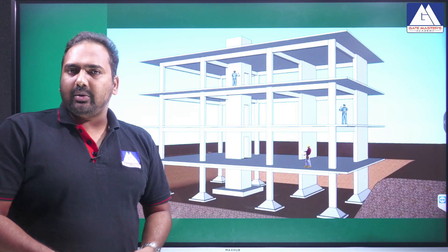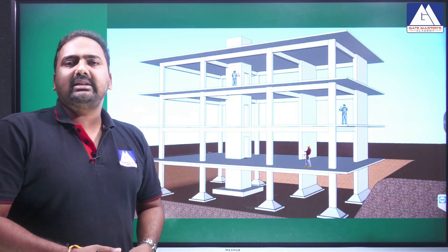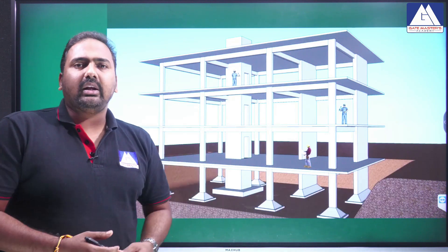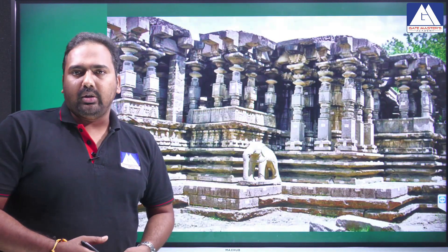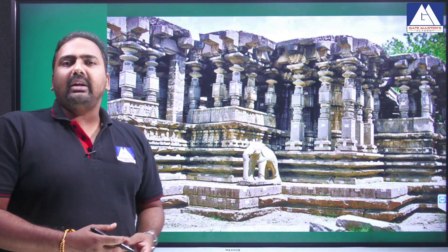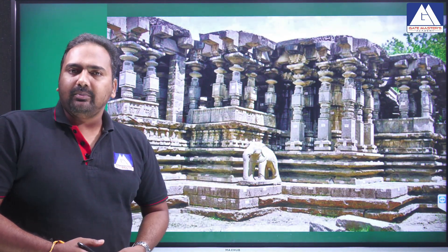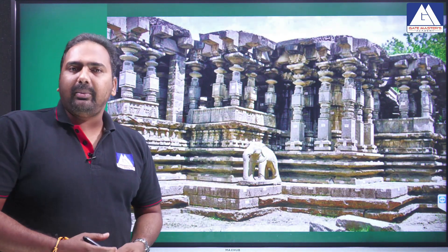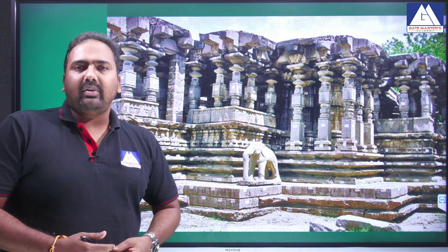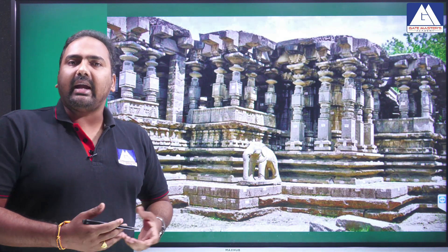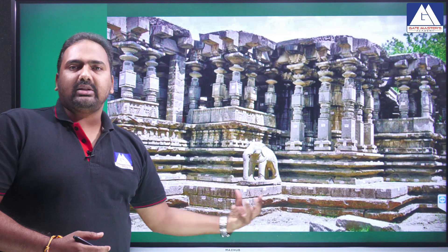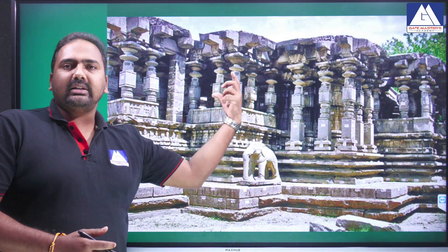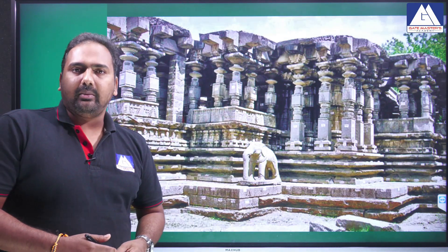The best example is in our Telangana — we have the 1000 Pillar Temple. Do we call it the 1000 Column Temple? No. Why? Because those members do not carry a load-bearing function; they cannot transfer the load from the superstructure to the substructure. These are just supporting members only.